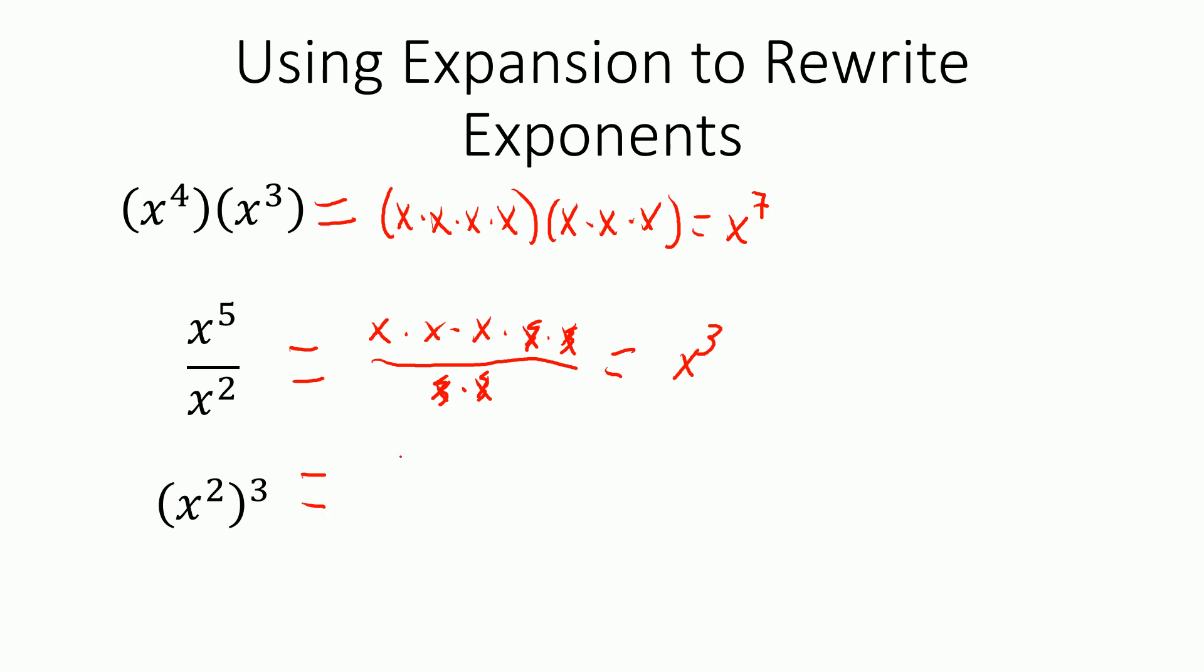For x squared to the third, well, the two to the third means to rewrite x squared three times. But then I can rewrite each of those by writing x twice for each one. And now I count one, two, three, four, five, six x's. So now it's just x to the sixth.